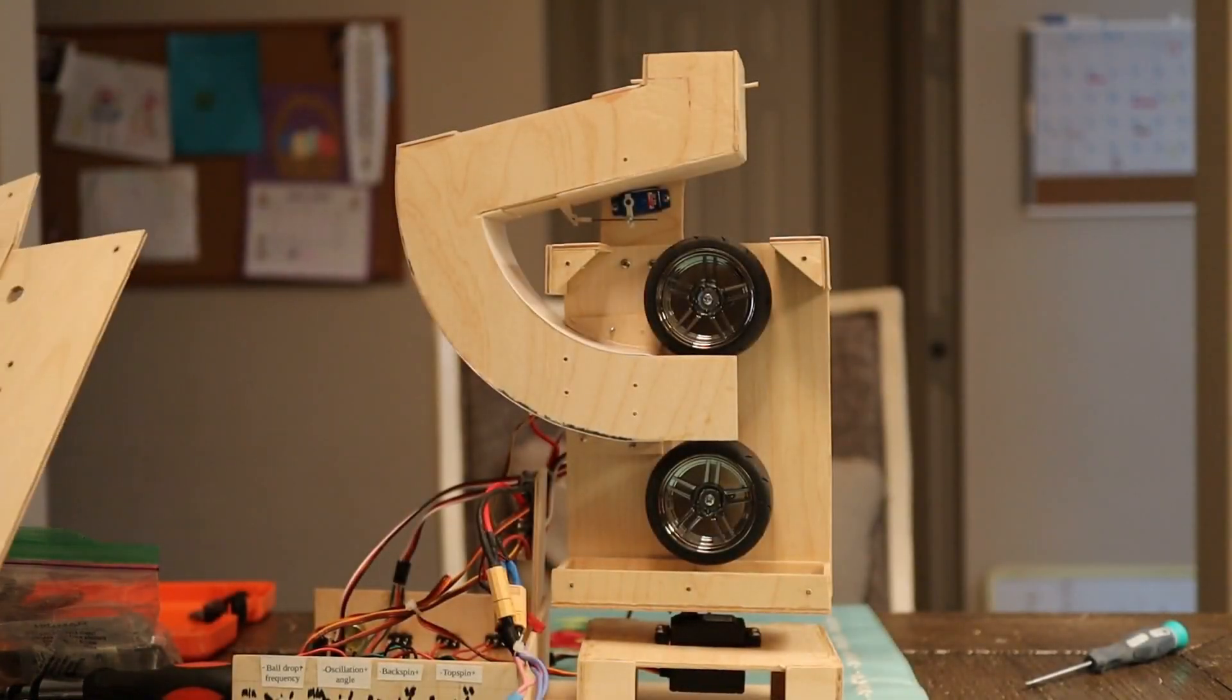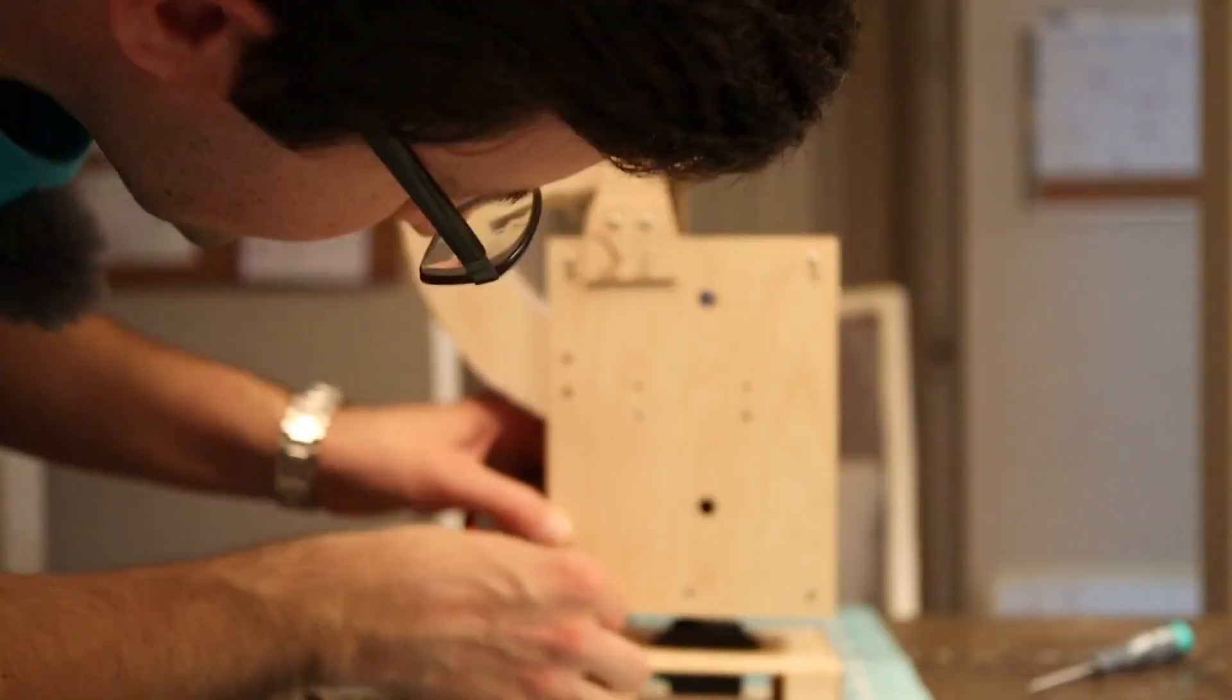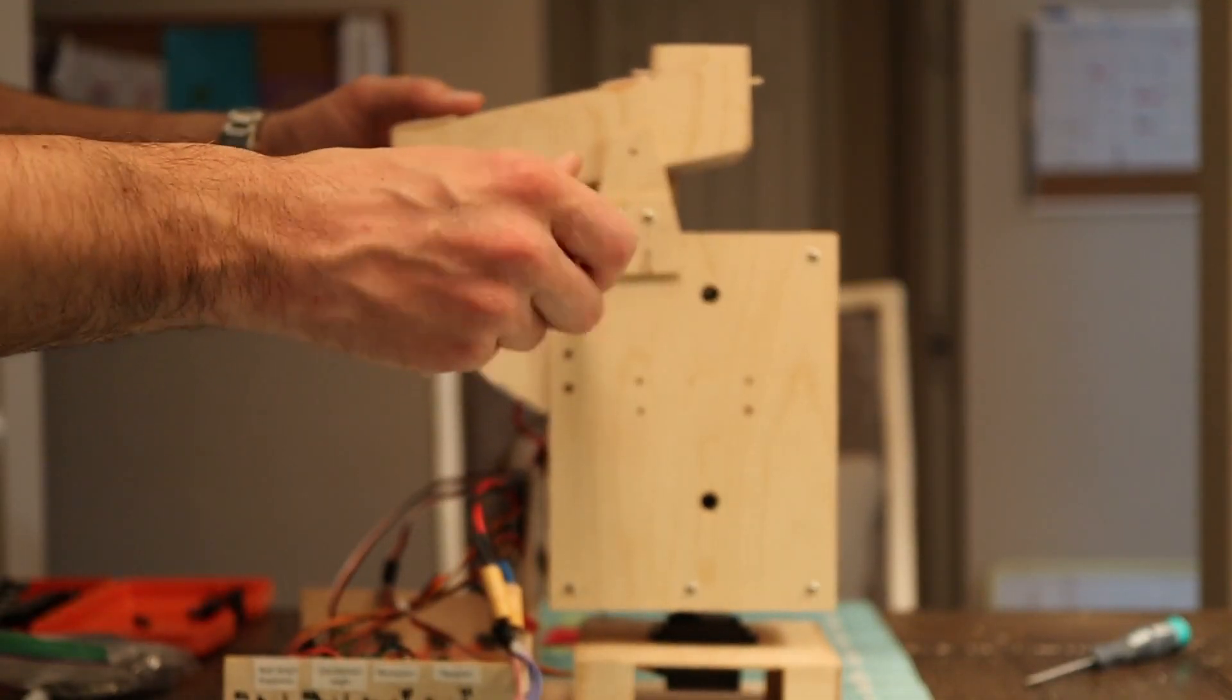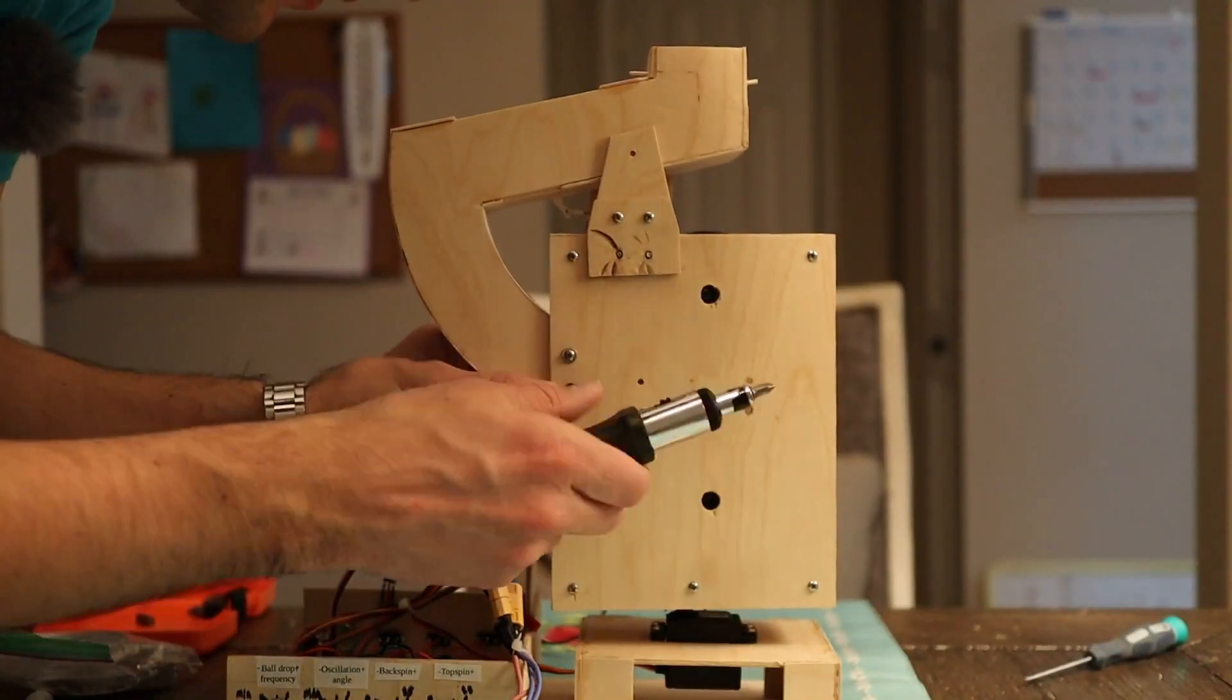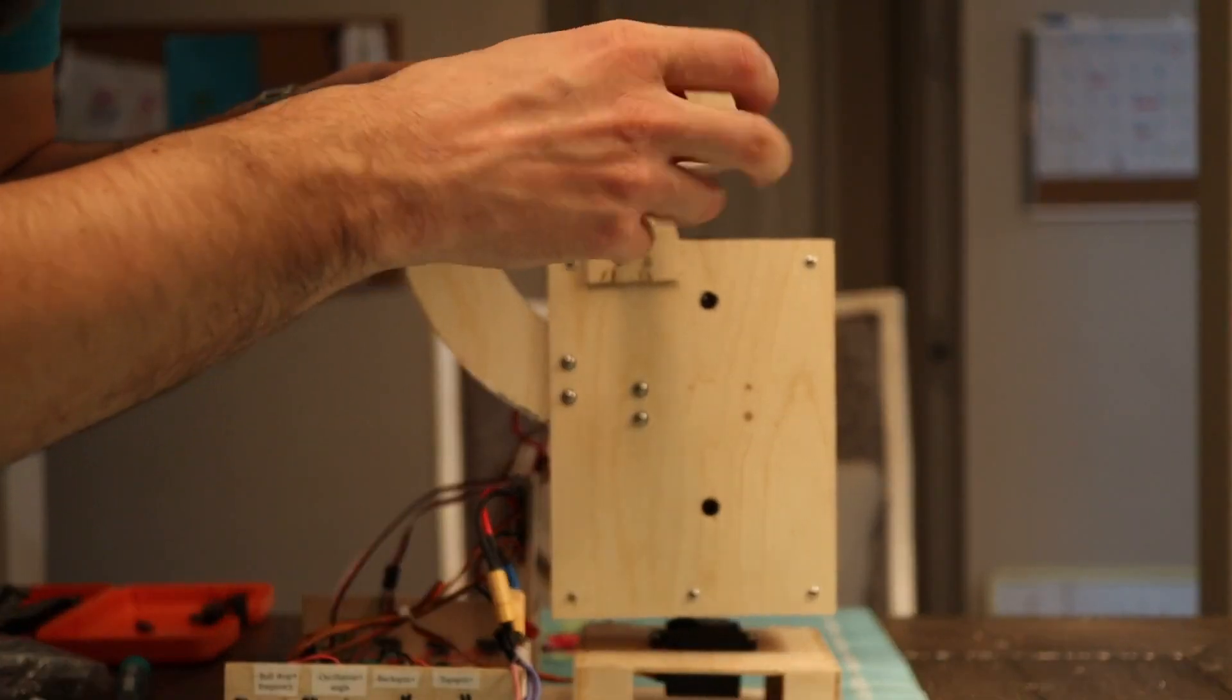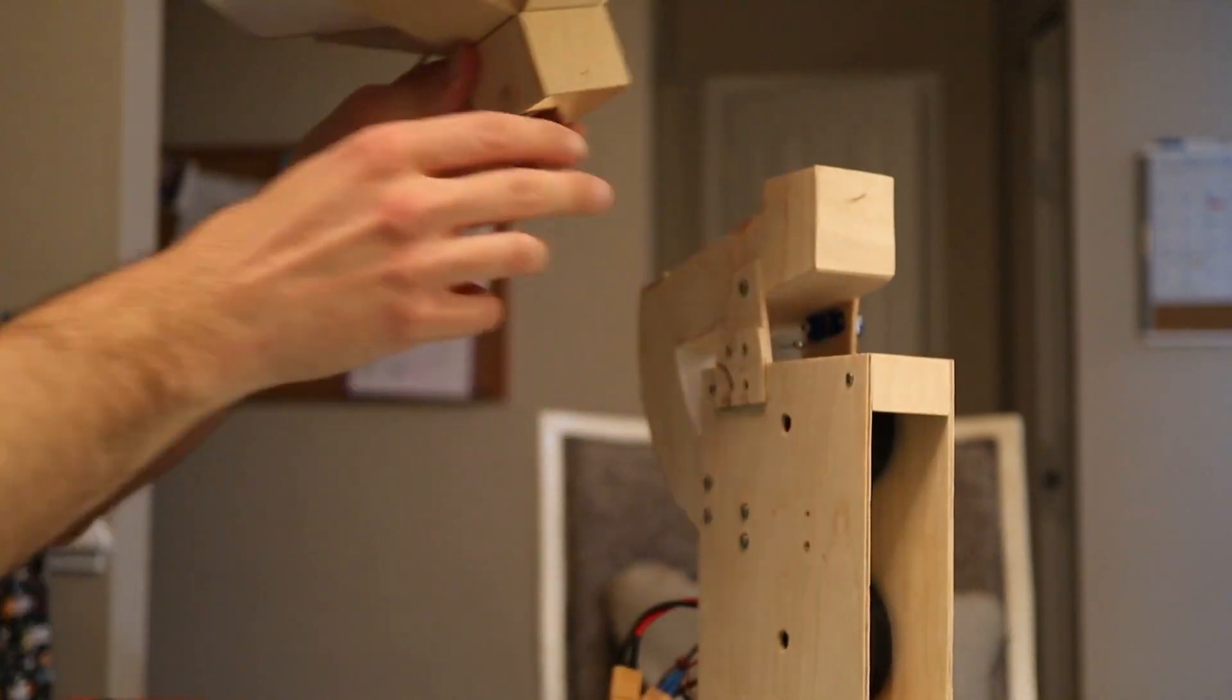Now I can put on the other side of the launcher. And there's actually one more part here. So this is the hopper. It just goes on like that. And then I have a couple of pins to hold it in place.